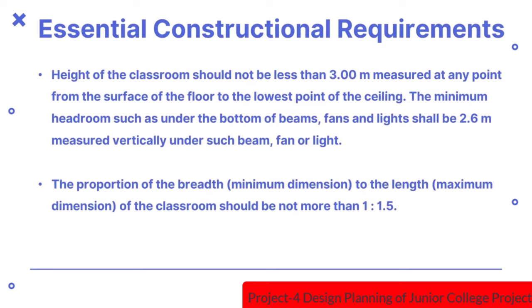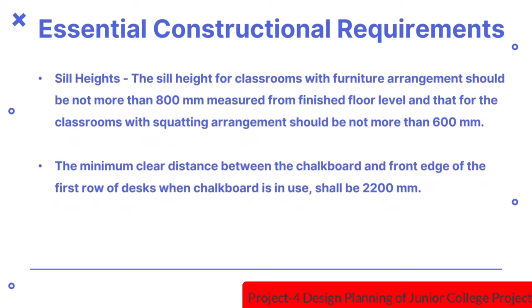Essential construction requirements: the height of the classroom should not be less than 3 metres measured from the floor to the lowest point of the ceiling. The minimum headroom under beams, fans and lights shall be 2.6 metres measured vertically. The proportion of breadth to length of the classroom should not be more than 1:1.5. The sill height for classrooms with furniture arrangements should not be more than 800mm from finished floor level, and for classrooms with squatting arrangement, not more than 600mm.